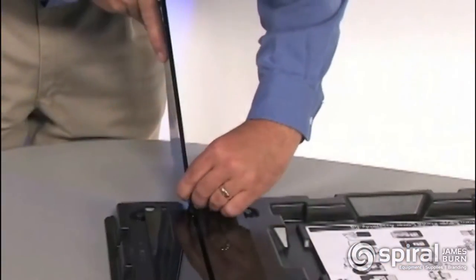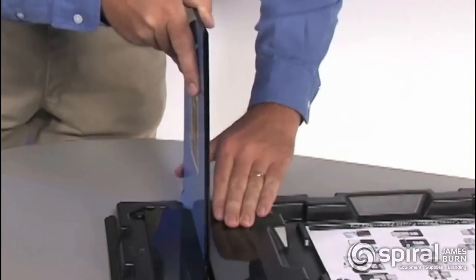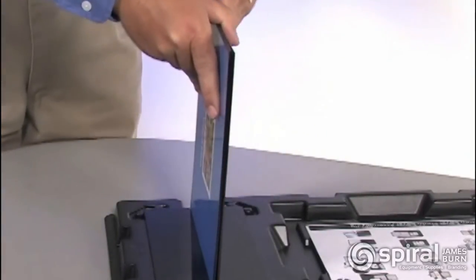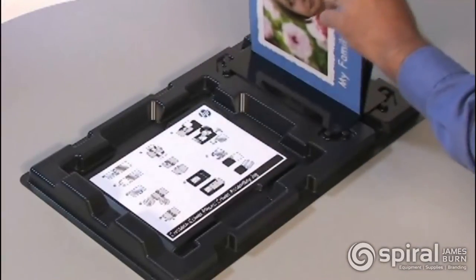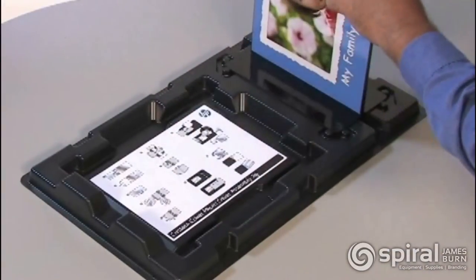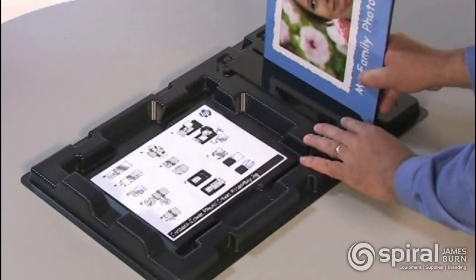Slide the spine into the creasing slot of the assembly jig. Do not let the top edges of the cover slip out of alignment as you insert the cover. Open and close the cover three times to set the spine crease. Remove the cover from the slot.